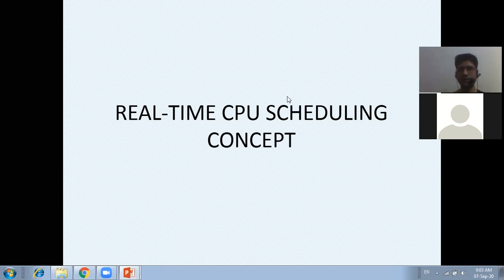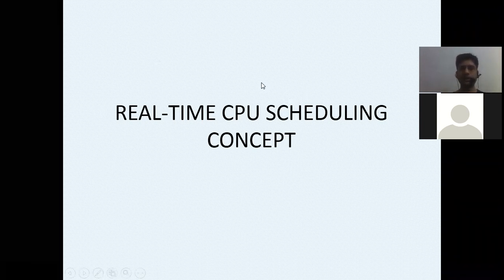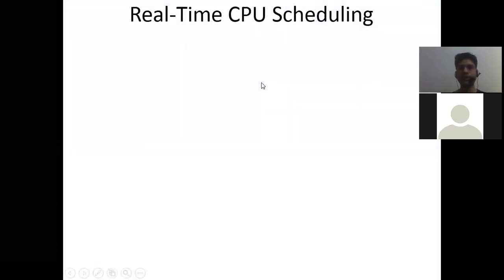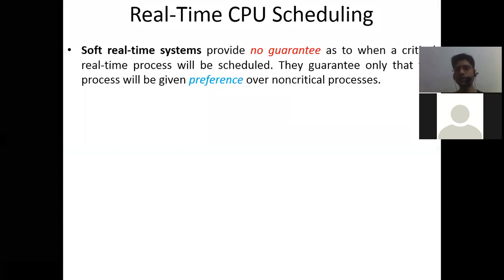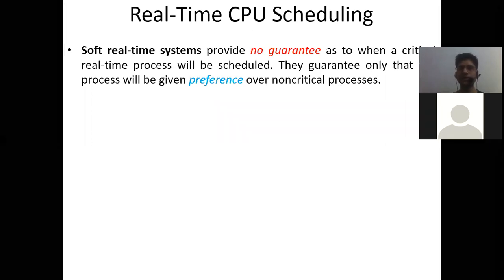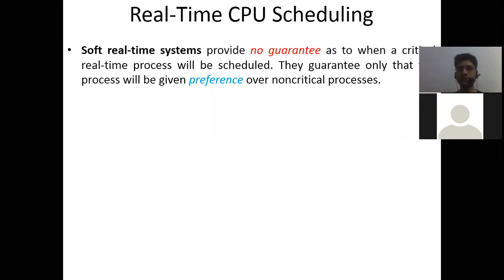We have two types of real-time systems: soft real-time systems and hard real-time systems, and we need different algorithms for each. In a soft real-time system, there is no guarantee as to when a critical real-time process will be scheduled. They are guaranteed only that the process will be given preference over non-critical processes.